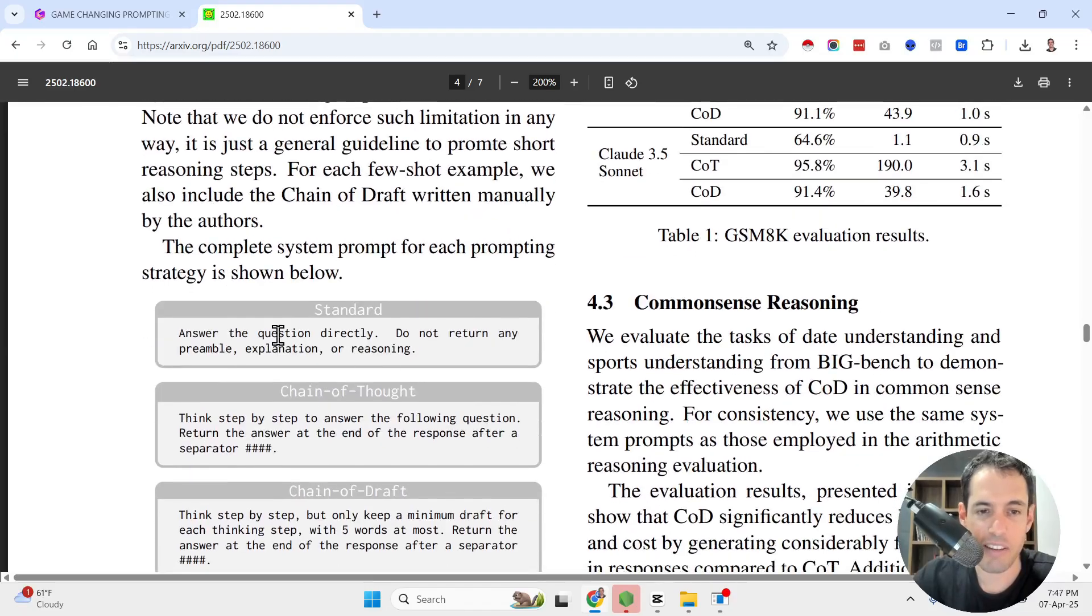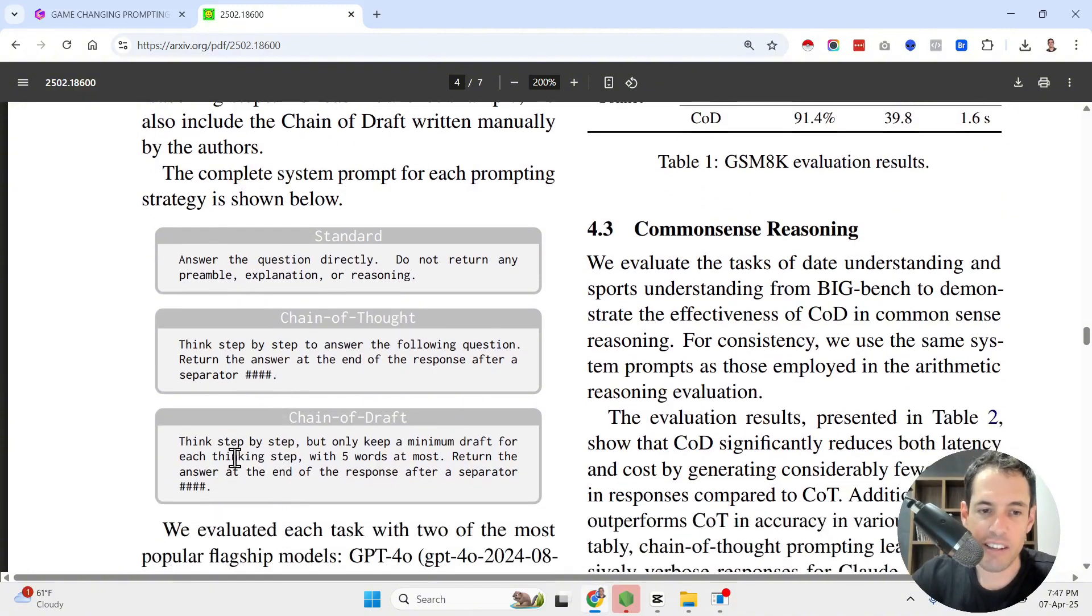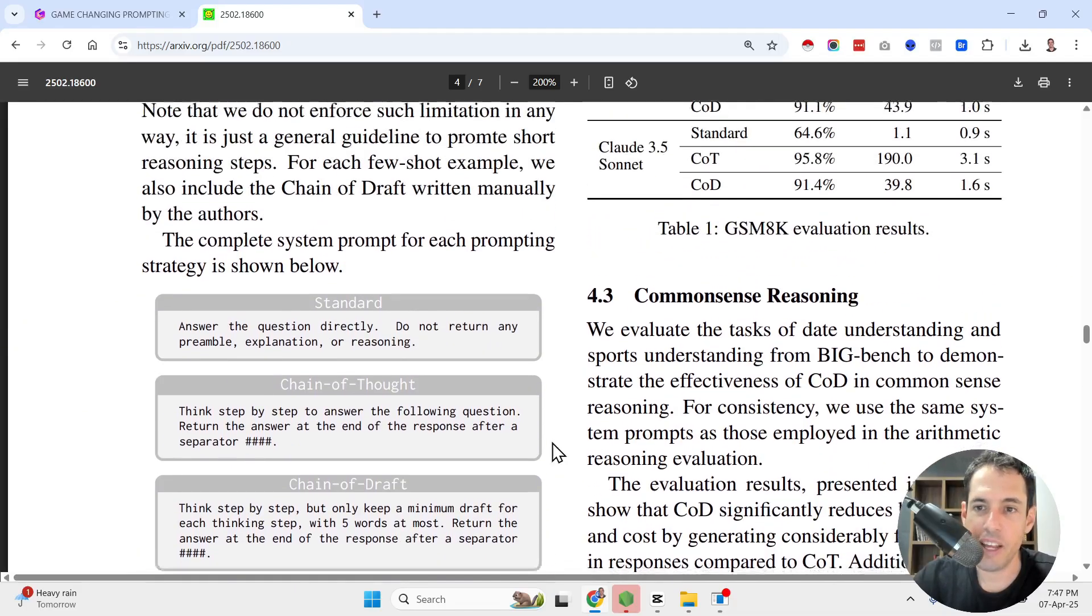Now, here are the system prompts. So answer the question directly. Do not return any preamble, explanation, or reasoning. This is a standard prompt. Then we have the chain of thought. Think step-by-step to answer the following question. Return the answer at the end of the response after a separator. And the chain of draft is think step-by-step, but only keep a minimum draft for each thinking step with five words at most. Return the answer at the end of the response after a separator.